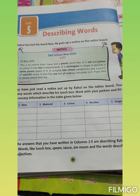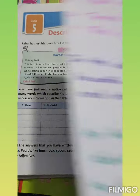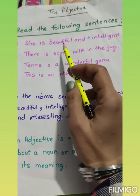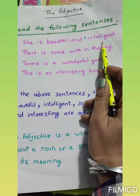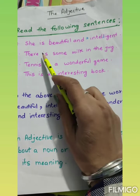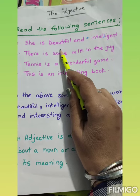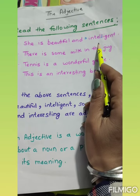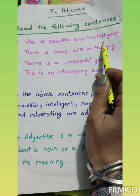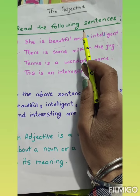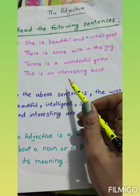What do we call adjective in Hindi? Vishetion. She is beautiful and intelligent. So what is beautiful and intelligent? Adjective. Adjective describes a noun or pronoun.